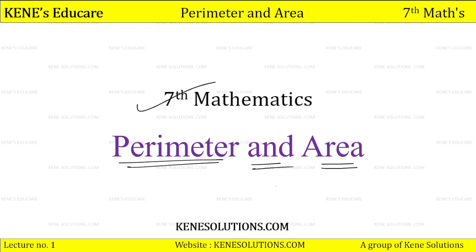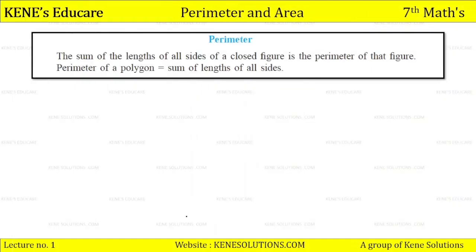So students, let's start this first lecture from the point of perimeter. Now, what is perimeter? The sum of the length of all sides of a closed figure — 'closed figure' is a very important word — it is the perimeter of that figure.